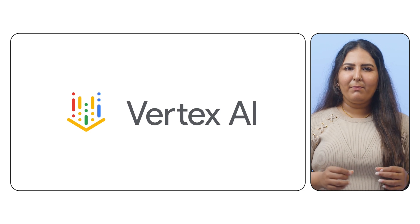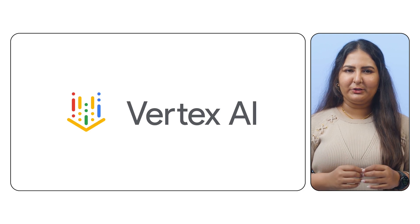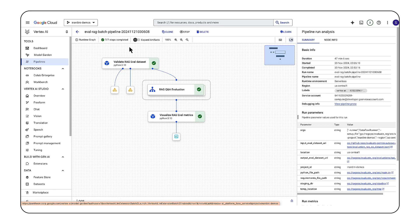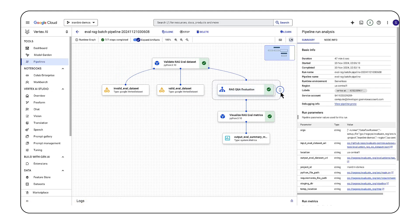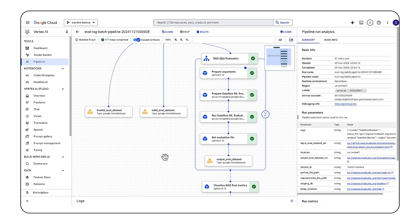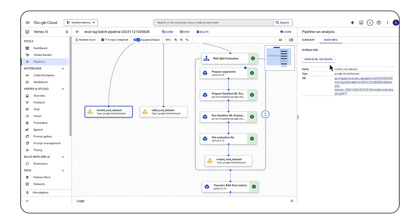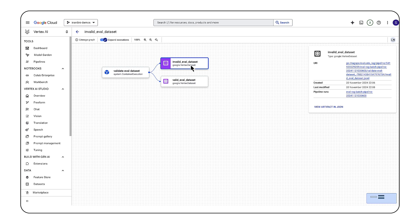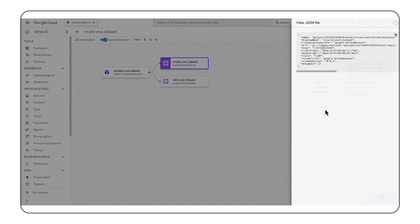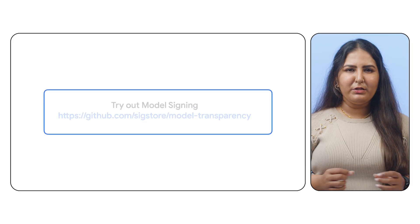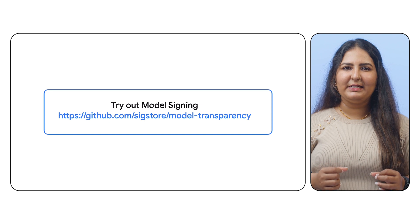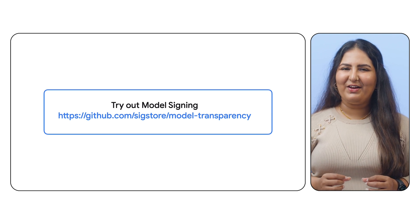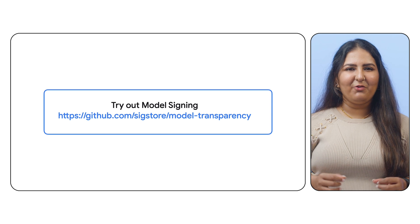Google Cloud's Vertex AI provides a comprehensive suite of MLOps tools to manage the end-to-end ML workflow. Within Vertex AI, the ML Metadata Service helps track the lineage of your models and datasets, providing a detailed record of the model's development journey. This comprehensive provenance data fosters transparency and accountability. You can also use SIGStore's model transparency GitHub repo to learn how to generate your own provenance data for AI models. Check it out to learn more.